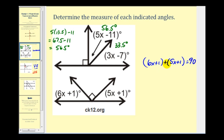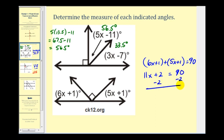We would have six x plus one plus five x plus one must equal ninety. Combining like terms: six x plus five x is eleven x, and one plus one is two, so eleven x plus two equals ninety. Subtracting two from both sides gives us eleven x equals eighty-eight. Dividing both sides by eleven, we have x equals eight.